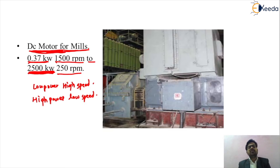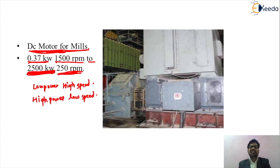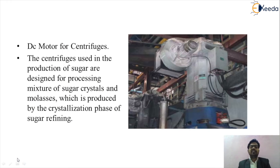For a 2500 kW machine at 250 rpm, the power capacity is very large and the speed is reduced. Nowadays, instead of DC motors, we prefer the induction motor. The induction motor that gives the highest starting torque is the slip ring induction motor. So instead of DC motors, we now prefer the three-phase slip ring induction motor for cane mill drives.